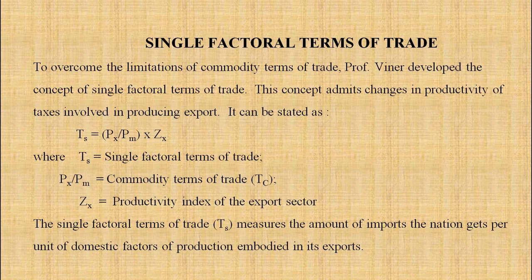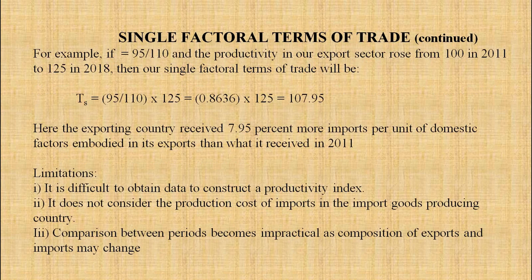To overcome the limitations of commodity terms of trade, Professor Wiener developed the concept of single factorial terms of trade. This concept admits the changes in the productivity of factors involved in producing exports. It can be stated as: Ts = (Px / Pm) × Zx, where Ts is single factorial terms of trade, Px/Pm is commodity terms of trade, and Zx is the productivity index of the export sector. Single factorial terms of trade measures the amount of imports the nation gets per unit of domestic factors of production embodied in its exports.